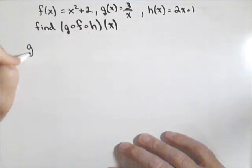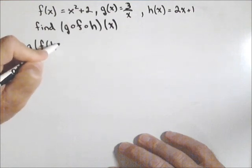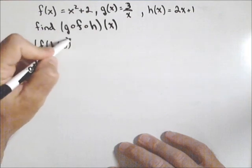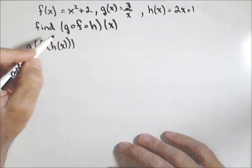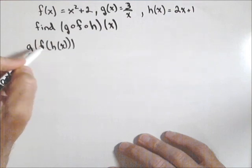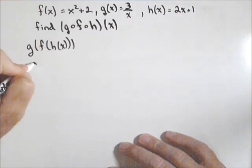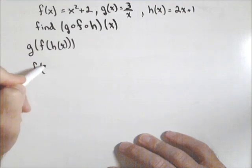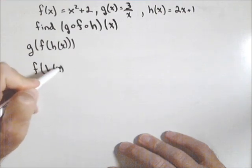Remember in our regular function notation, that'd be g of f of h of x. Now it's kind of hard to look at this way, so what I would say is start with your inside two functions. So let's just first concentrate on finding f of h of x.